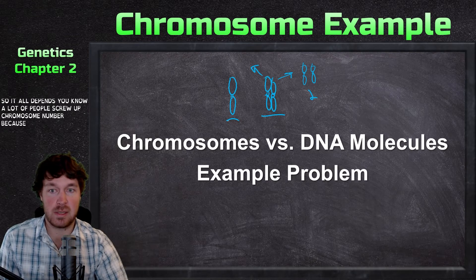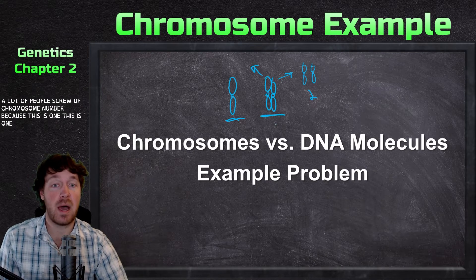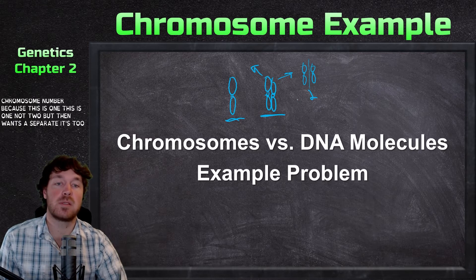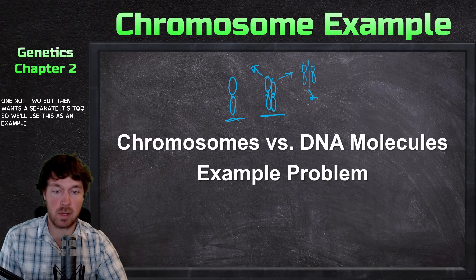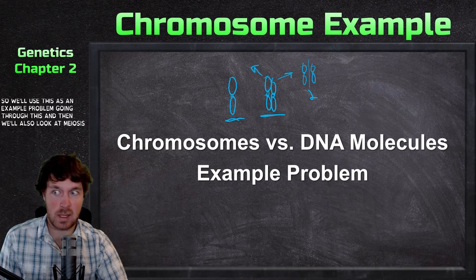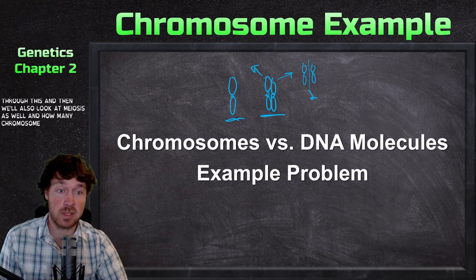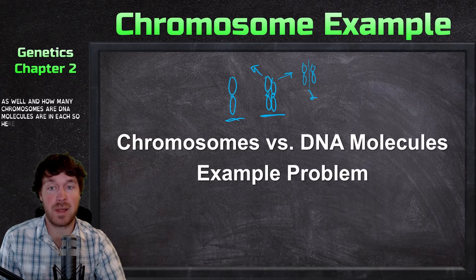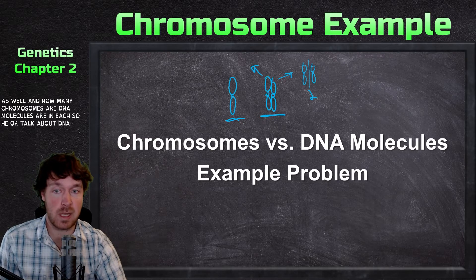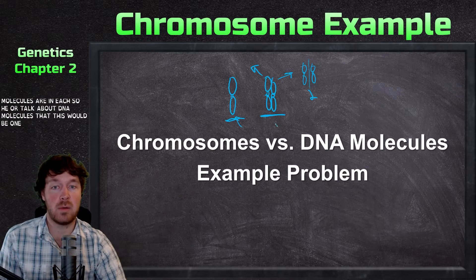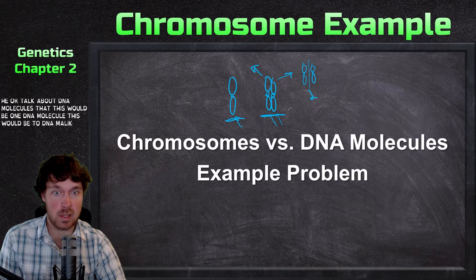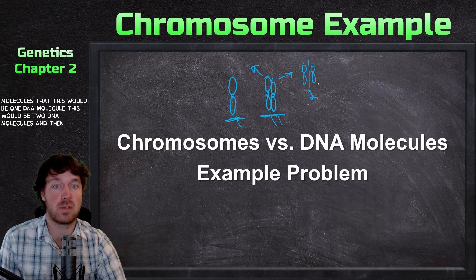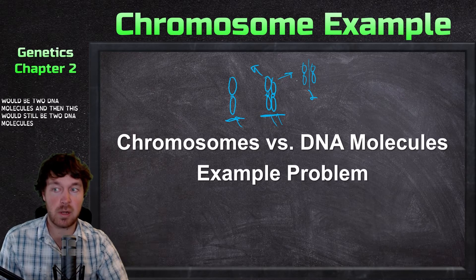A lot of people screw up chromosome number because this is one, this is one — not two — but then once they separate it's two. We'll use this as an example problem going through this and then look at meiosis as well, and how many chromosomes versus DNA molecules are in each. For DNA molecules: this would be one DNA molecule, this would be two DNA molecules, and then this would still be two DNA molecules.